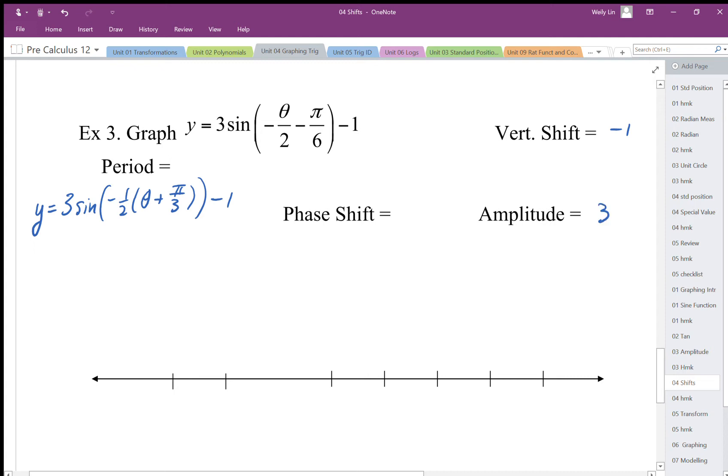Okay, what is the phase shift? Left pi over three. And what is the period of this function? Four pi, right? It's going to be the period is equal to two pi divided by half. That is four pi.